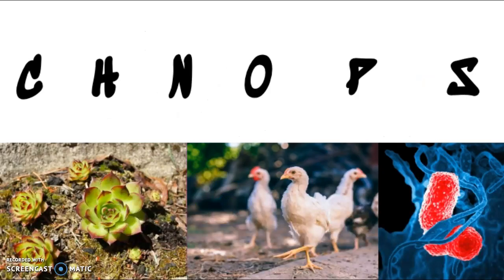The main elements we'll start with this year are carbon, hydrogen, nitrogen, oxygen, phosphorus, and sulfur. You can remember this by CHNOPS. These are the symbols for the six most abundant elements in living organisms.